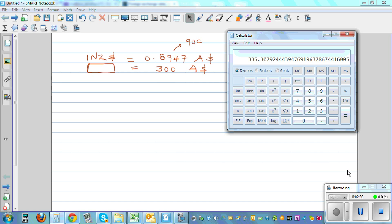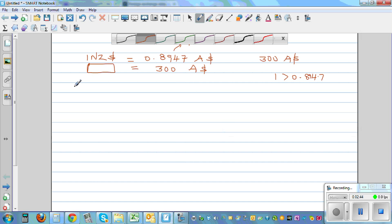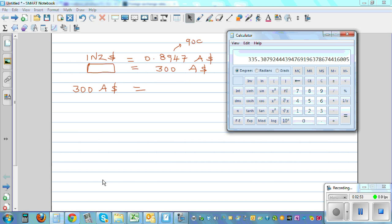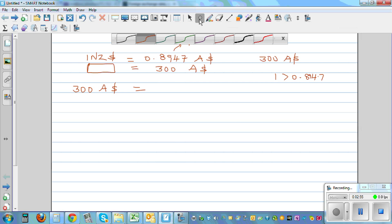So this is 335 New Zealand dollars, 335.3. So 300 Australian dollars is 335.3 in 1 decimal place. In New Zealand dollars, it would be 335.3 New Zealand dollars.